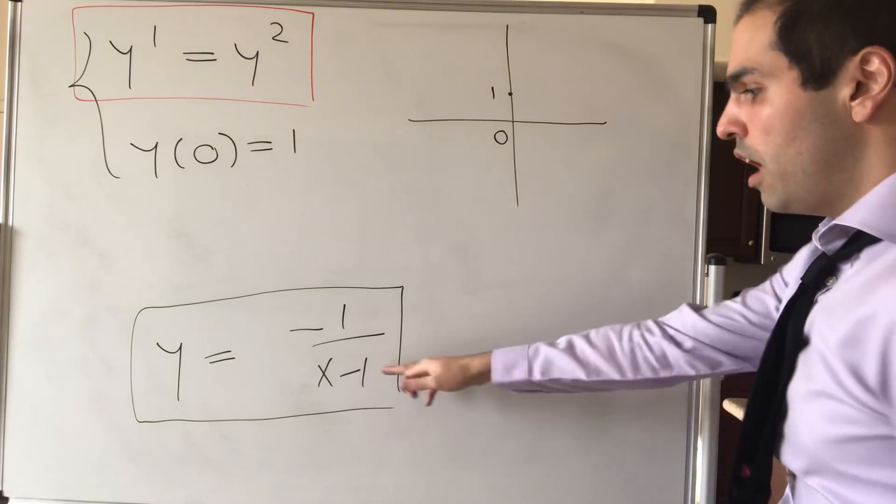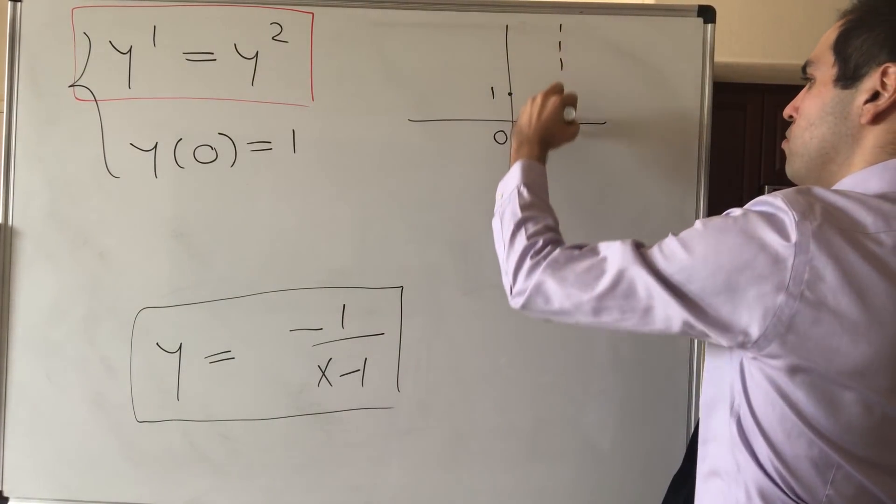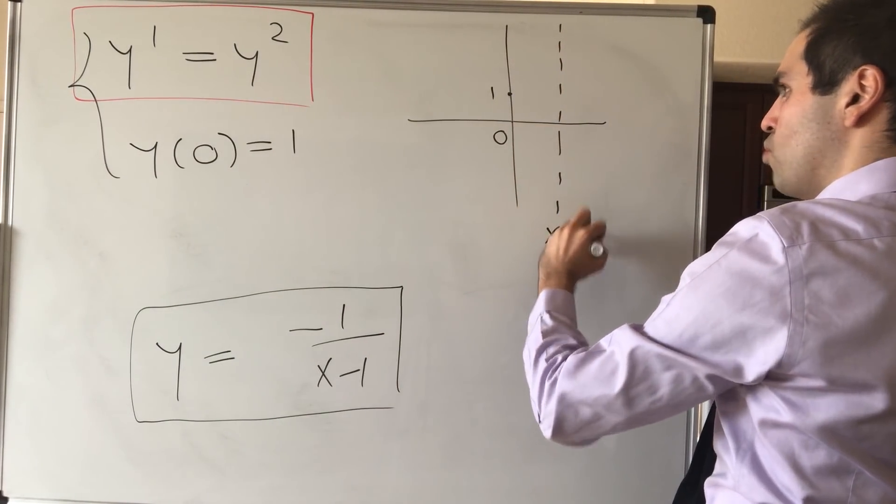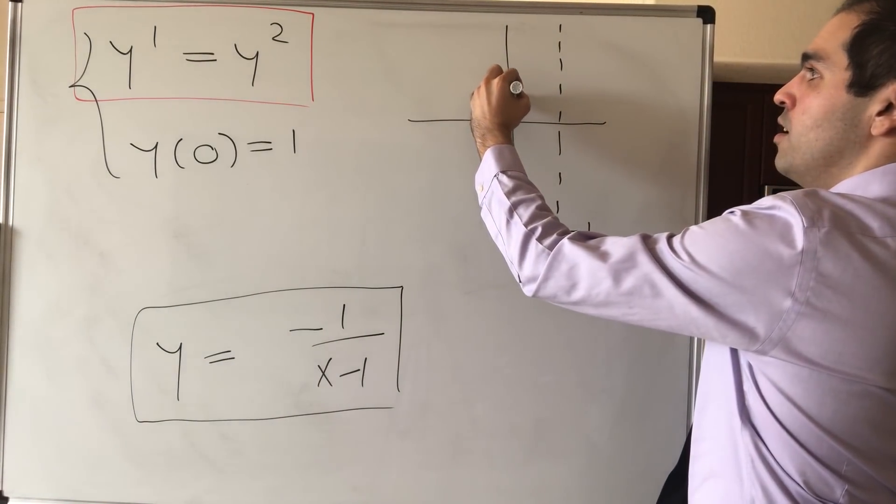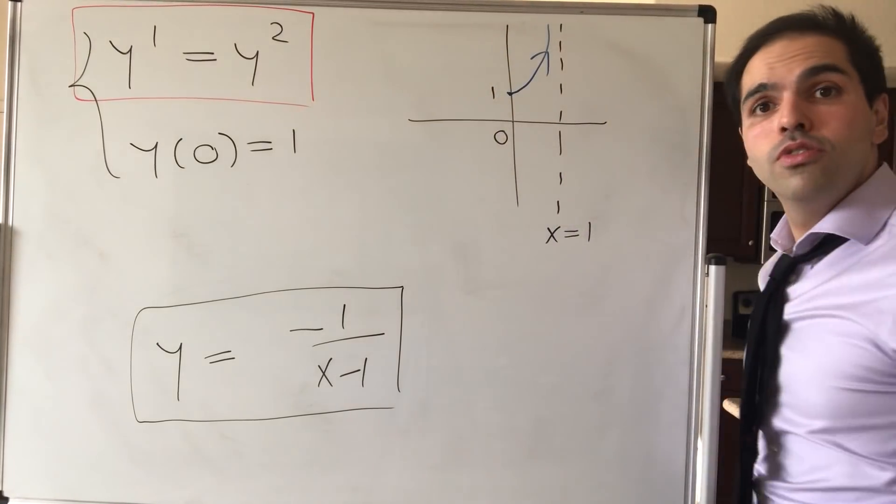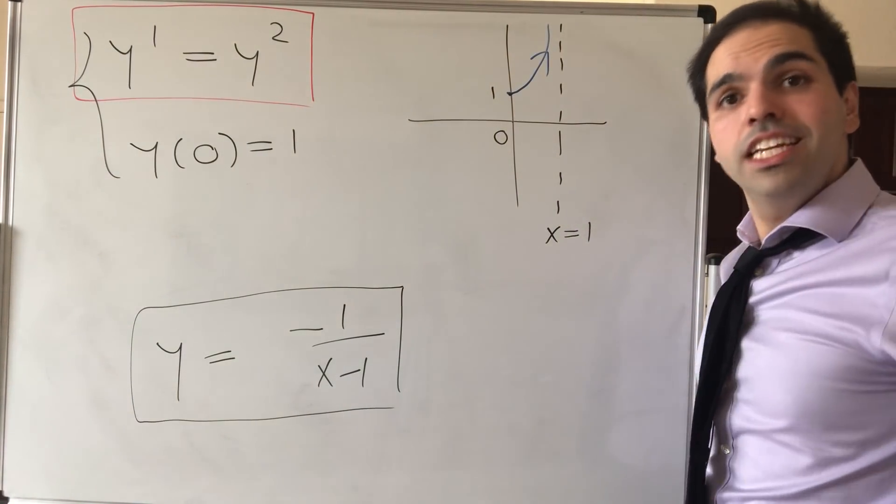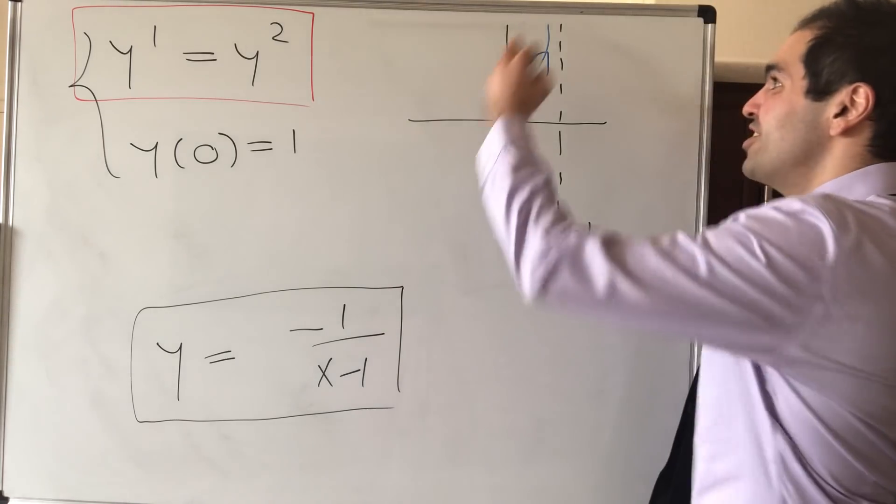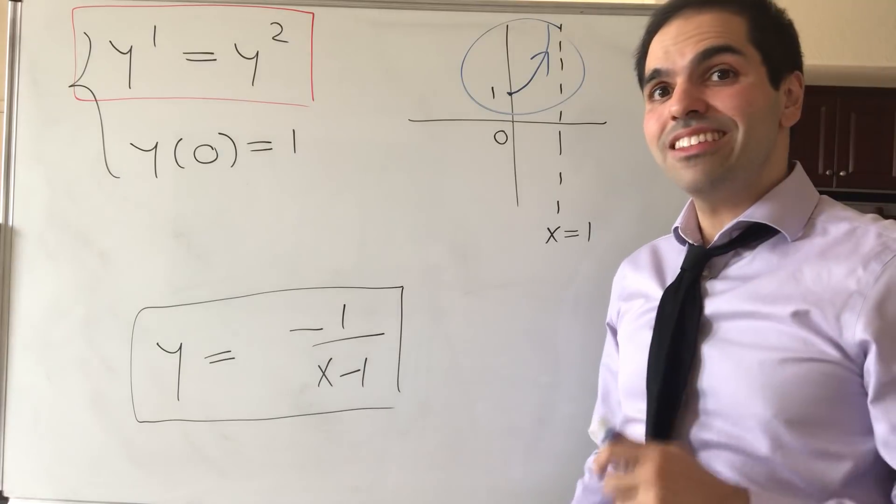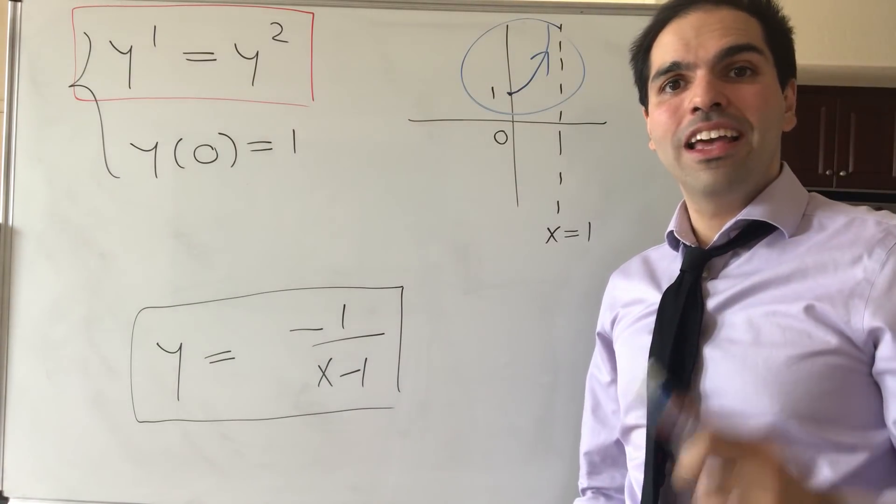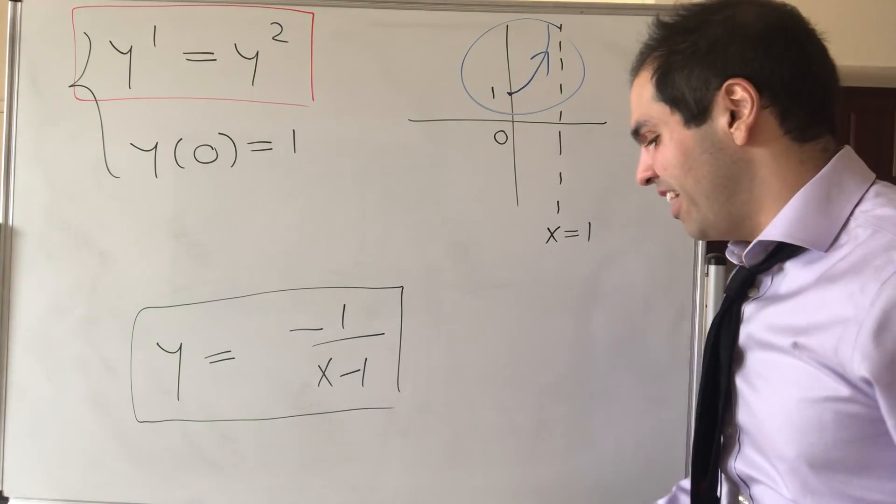So that's good. But now notice there's this asymptote at x equals 1. And what happens to this function? Well, it starts at 1 and whoosh, it just blows up. So this is an example of a differential equation where the solution blows up, which means that the solution isn't always defined for all time.